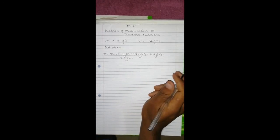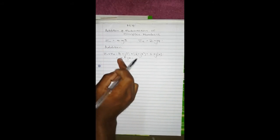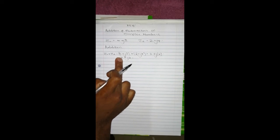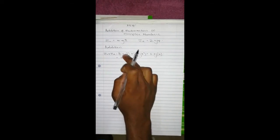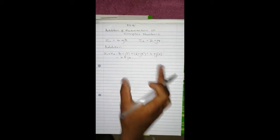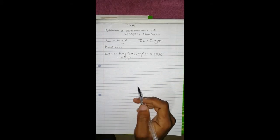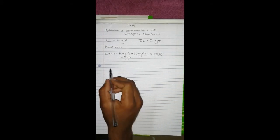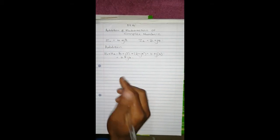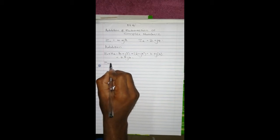That's just about it. You add the real numbers together to get the real part, and you add the j parts together to get the imaginary part. And then for subtraction...